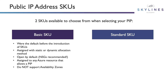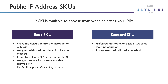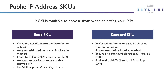The standard SKU is the preferred method since its introduction — if in doubt, just choose the standard SKU. They always use the static allocation method. They are secure by default and closed to all inbound traffic right out of the gate. They're assigned to NICs, standard load balancers, or application gateways. They do now support availability zones and can be zone redundant or zonal — you have some choices there.